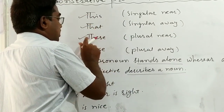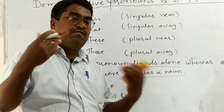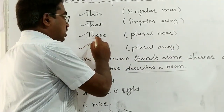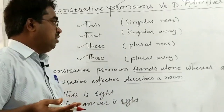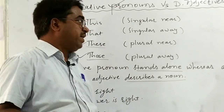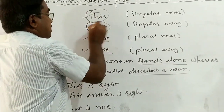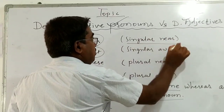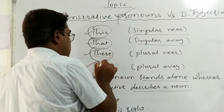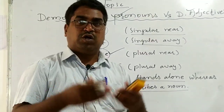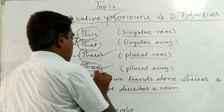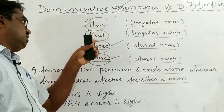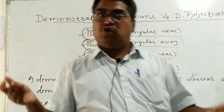'These' refers to anything which is more than one in number and fairly near to us. 'Those' refers to anything which is more than one in number and away from us, not close or near. So to summarize: 'this' and 'that' refer to singular objects — 'this' for singular near, 'that' for singular away. 'These' and 'those' refer to plural objects — 'these' for plural near, 'those' for plural away.